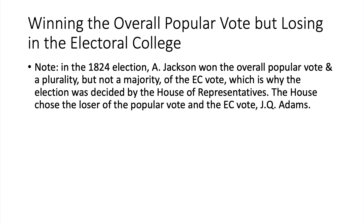Regarding winning the overall popular vote but losing in the electoral college: the election of 1824 was unique. Andrew Jackson won the overall popular vote and won the most electoral college votes, but he won only a plurality — not a majority — of electoral college votes. That is why the election was decided by the House of Representatives, which chose John Quincy Adams, the loser of the popular vote, because Jackson fell short of a majority in the electoral college.